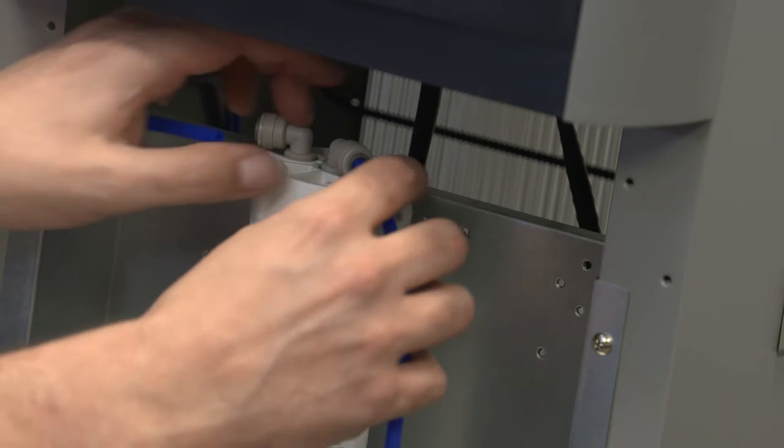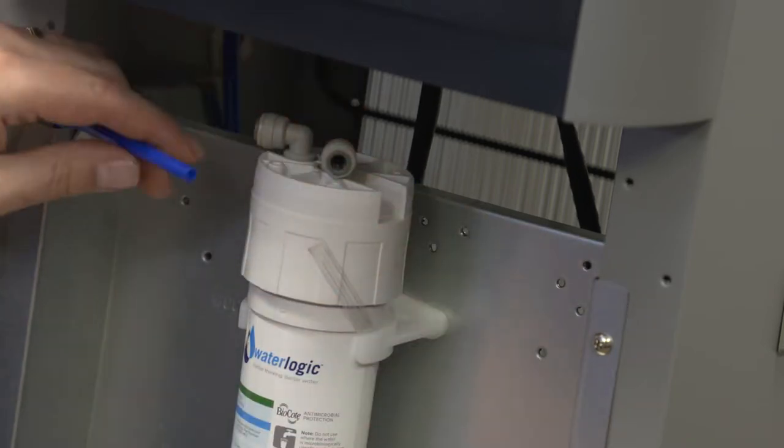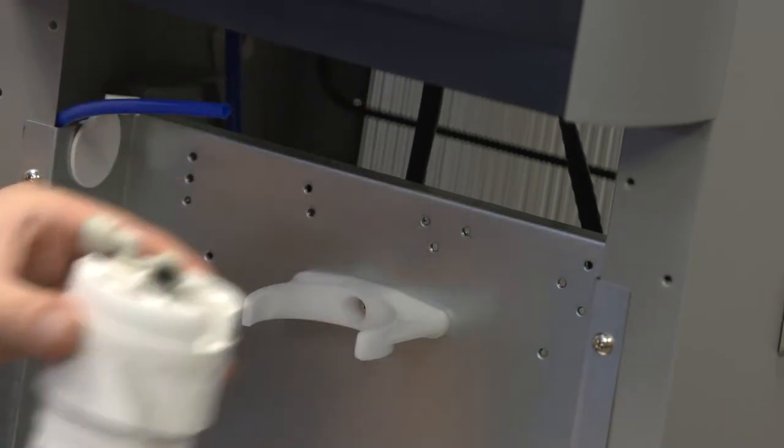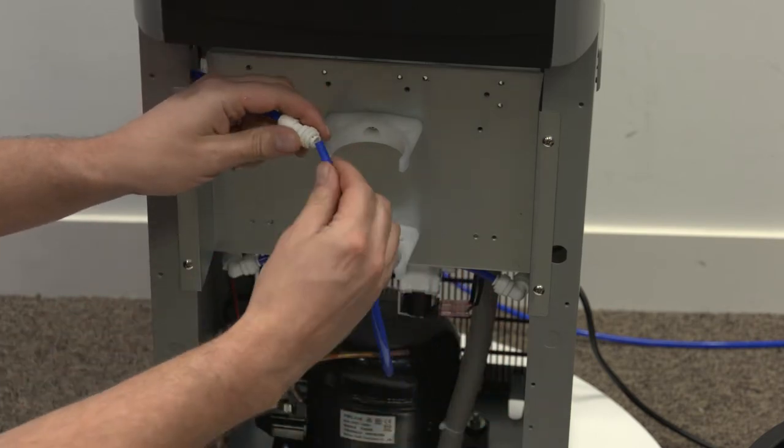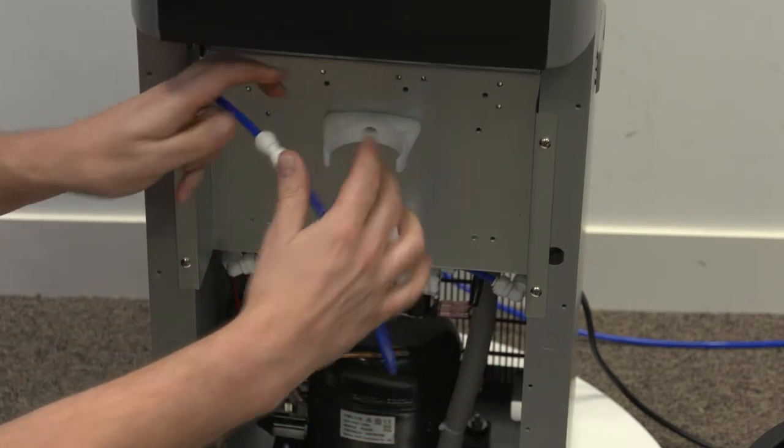To remove the filters, disconnect the quarter inch tubing from the top and pull it towards yourself. Bypass the filter by connecting the two pipes together using a straight connector.